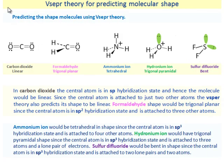We will continue to demonstrate how VSEPR theory can be used for predicting molecular shapes. In carbon dioxide, the central atom is in sp-hybridization state and hence the molecule would be linear. Since the central atom is attached to just two other atoms, VSEPR theory also predicts its shape to be linear.